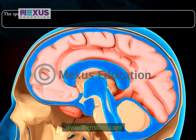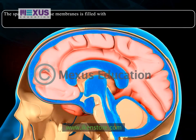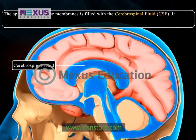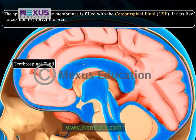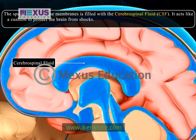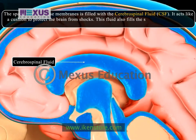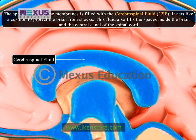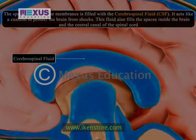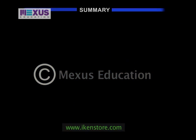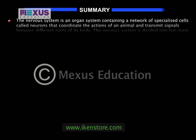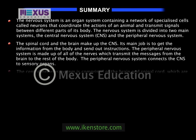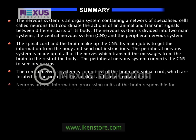The space between these membranes is filled with cerebrospinal fluid (CSF). It acts like a cushion to protect the brain from shocks. This fluid also fills the spaces inside the brain and the central canal of the spinal cord.